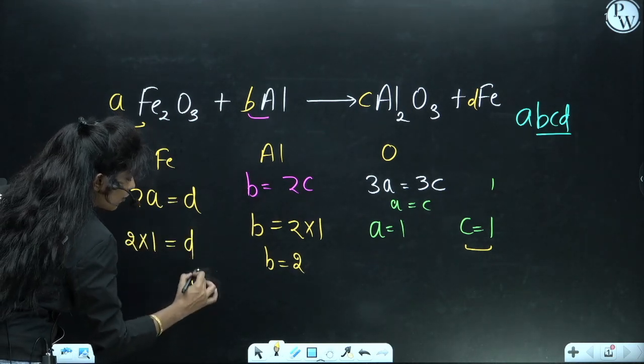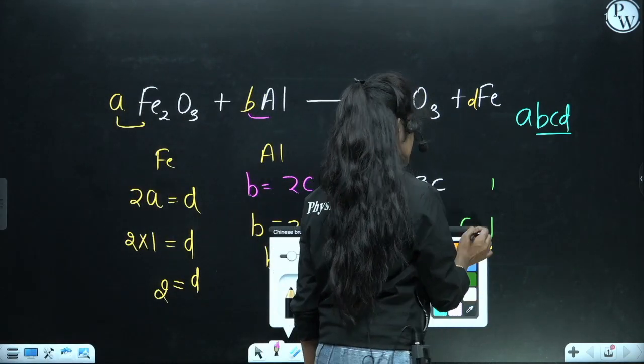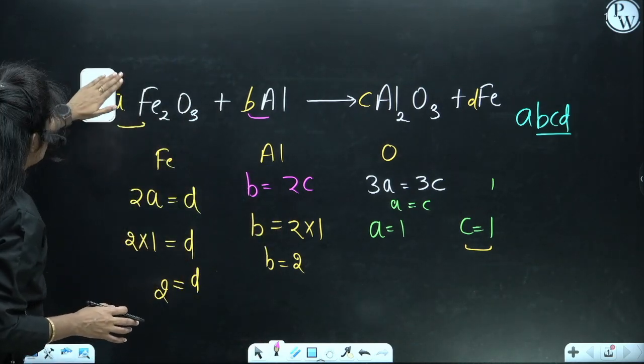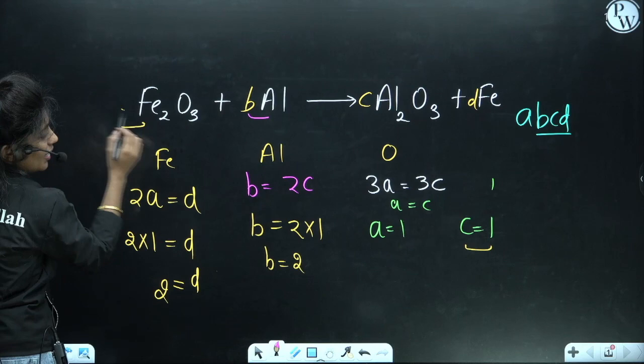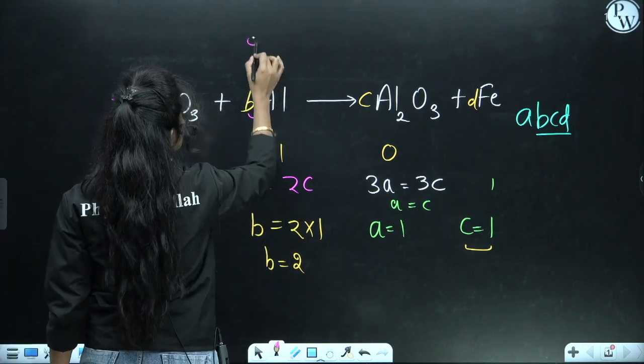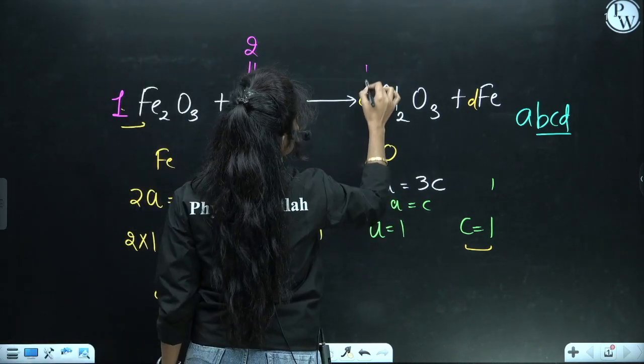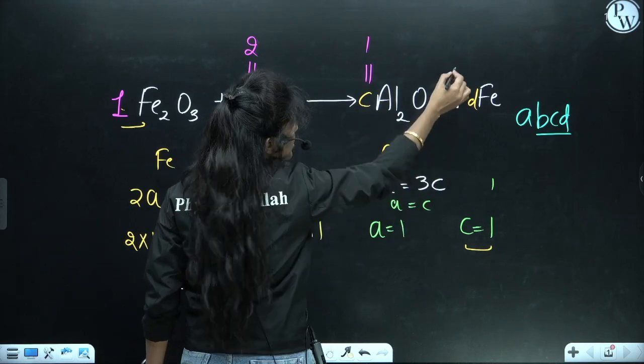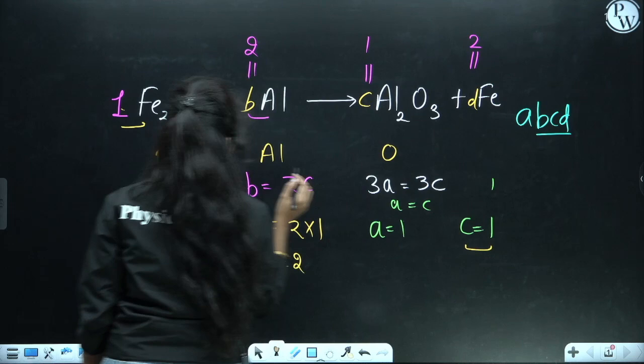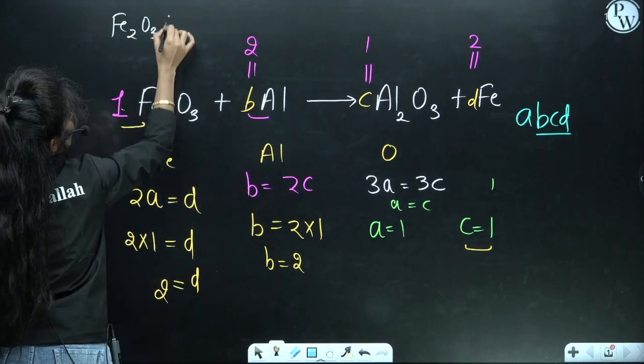How simple is this? Now what I have to do is just place the values. So a is equal to 1, b is equal to 2, so I can apply 2 here. And c is equal to 1, also d is equal to 2. So in the balanced form, I can write this equation again like this: Fe₂O₃ plus...